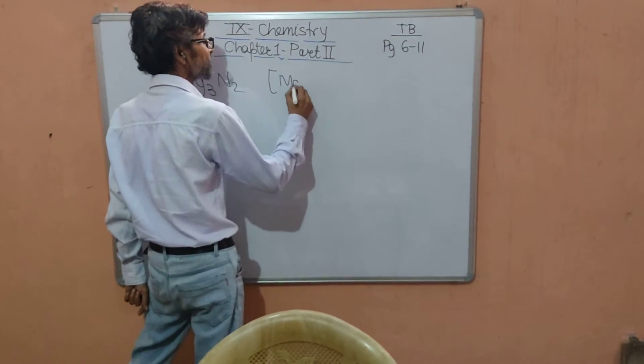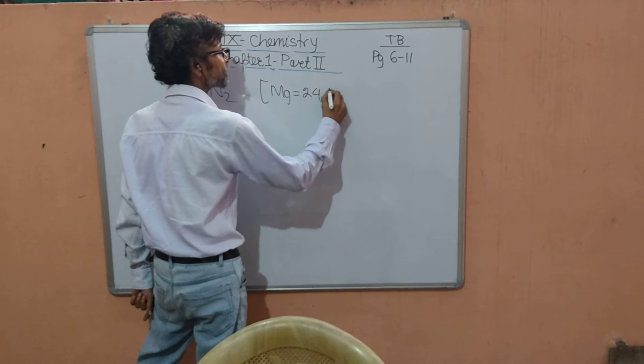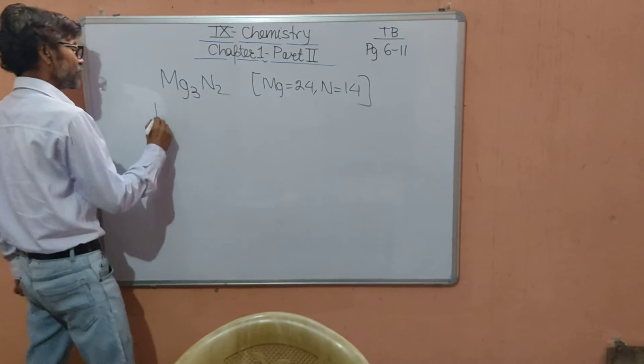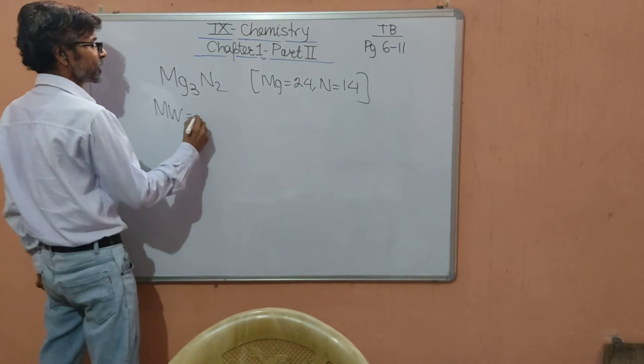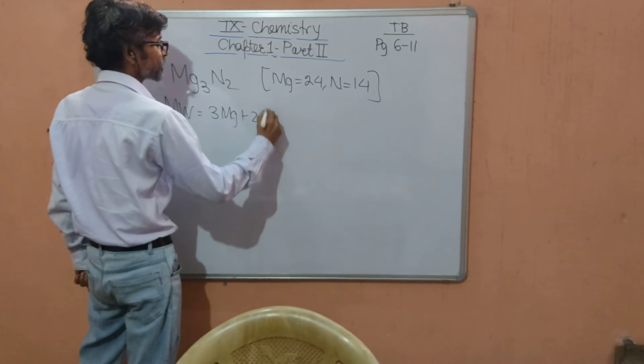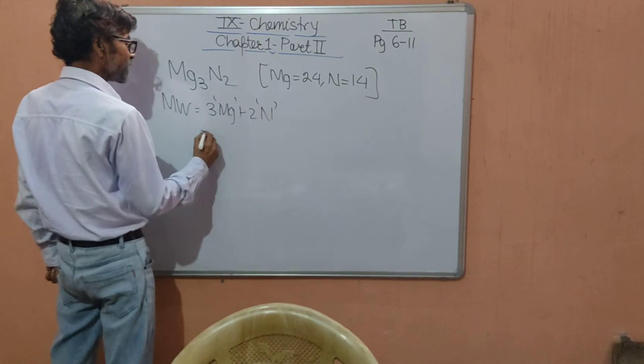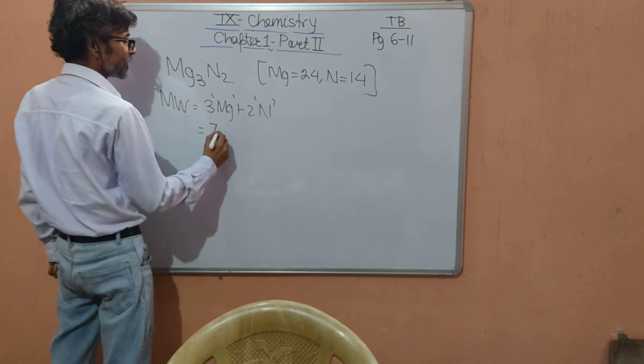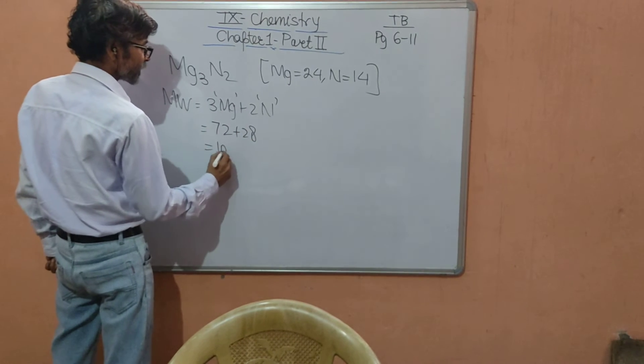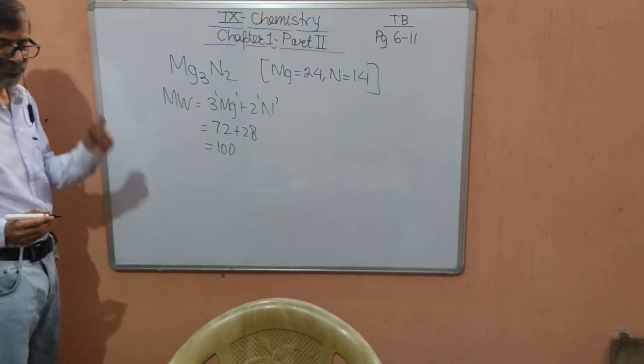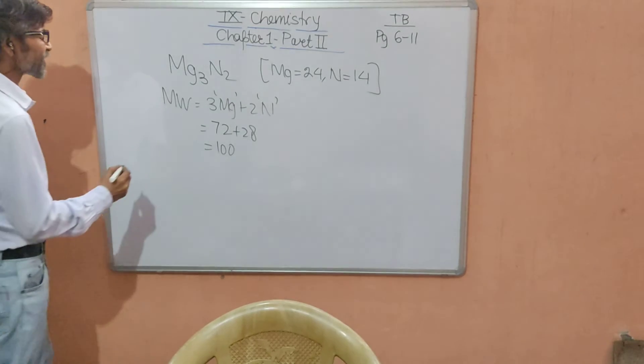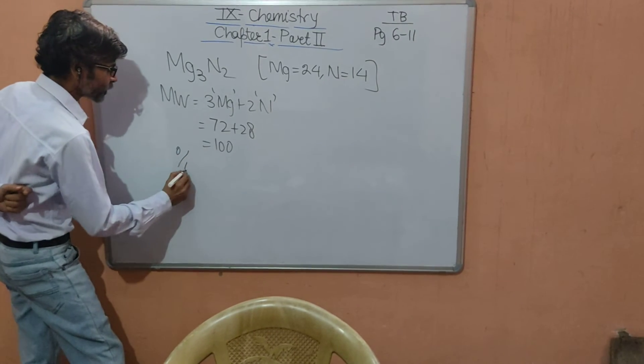To do this we require, of course, first we have to calculate the molecular weight. The molecular weight is 3 magnesium plus 2 nitrogen giving you 24 times 3 is 72, 14 times 2 is 28. Adding this: 100. Purposefully I have taken magnesium nitride whose total molecular weight is 100 so that calculation is easy.